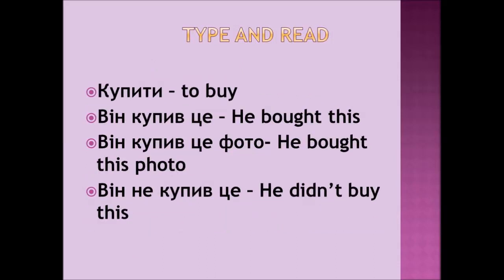And the last section: we have the verb 'to buy.' In Ukrainian it is КУПИТИ. So let's build up a phrase with this. Read and type: ВІН КУПИВ ЦЕ — he bought this. ВІН КУПИВ ЦЕ ФОТО — he bought this photo. And the last phrase: ВІН НЕ КУПИВ ЦЕ — he did not buy this.